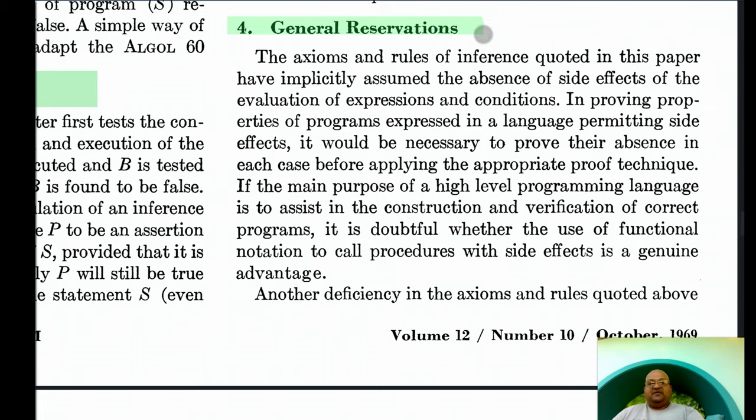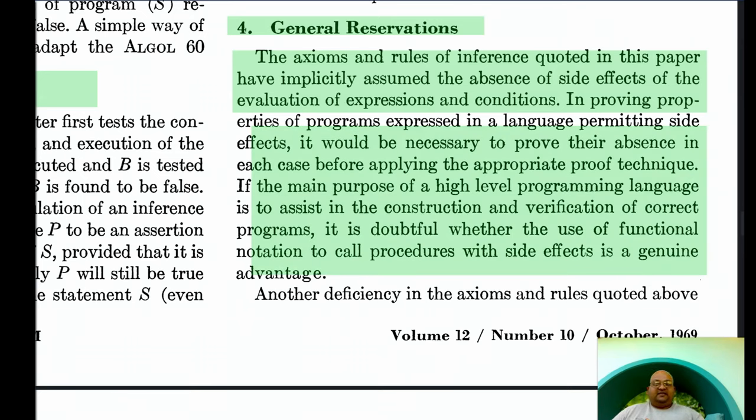Hoare continues by making a few other observations. The very first one is that this entire framework assumes the absence of side effects. And side effects are really problematic for this framework because they're really hard to model. You'll notice that every rule and every axiom in this framework talks about just the program text under consideration and doesn't make any guarantees about what that program text might have done to variables that are not even referred to within that program text. And this is what makes writing code with side effects a bad idea. They're hard to reason about. They're hard to prove correct. And we knew this back in 1969.